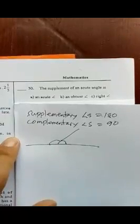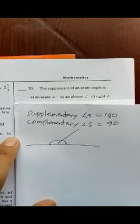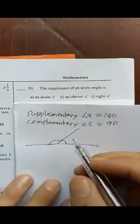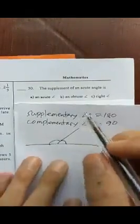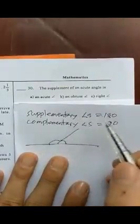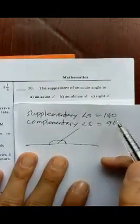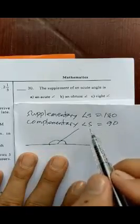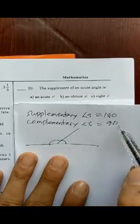The supplement of an acute angle is equal to what? Supplementary angles always have a total of 180 degrees, and complementary angles always have a total of 90 degrees.